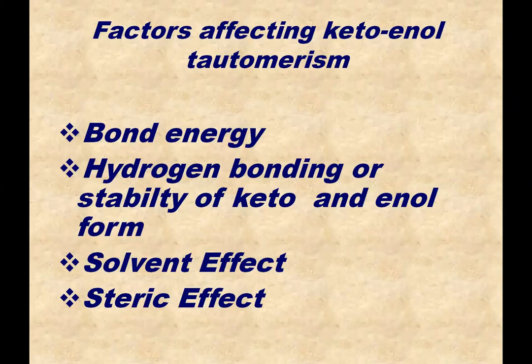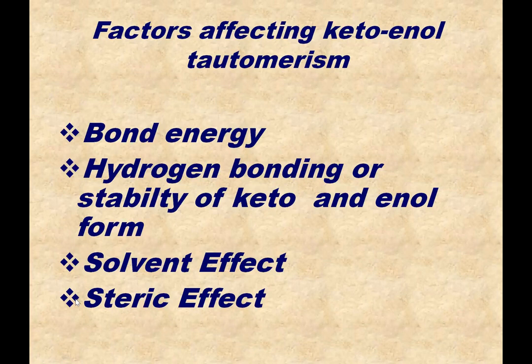Today we will discuss factors affecting keto-enol tautomerism, or the percentage of keto and enol forms in tautomerism. There are different factors which can affect the percentage of these two forms. The most important factors are: number one, bond energy; number two, hydrogen bonding or stability of keto and enol form; number three, solvent effect; and number four, steric effect.